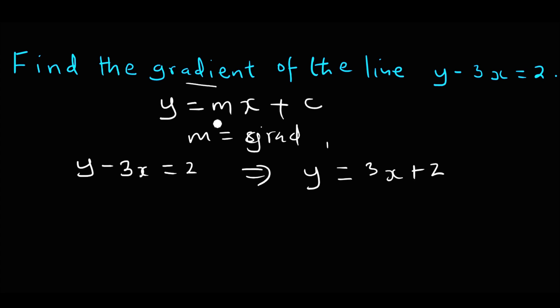So, as you can see, m is equal to 3. And that is the gradient of that particular line.